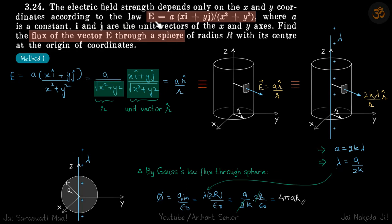We are given an electric field which in the space is varying by this function of x and y. We need to find the flux of the vector E through a sphere which is kept at origin and its radius is r.